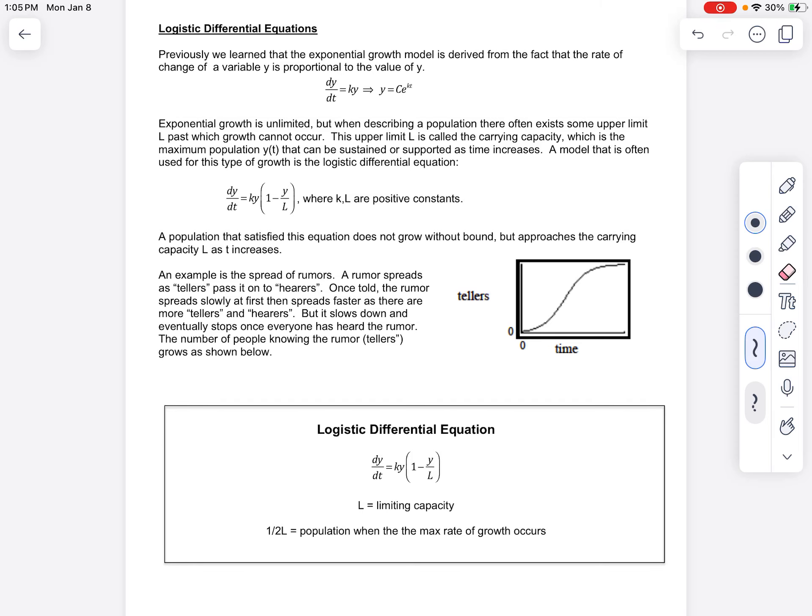Previously we learned about the exponential growth model, and then we learned that the rate of change of a variable, that's your derivative, dy/dt is proportional to y, or typically that's your population. And if we solve this differential equation, this is the solution that we get.